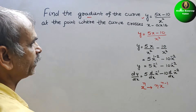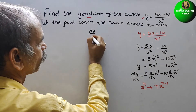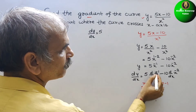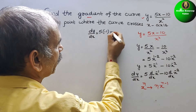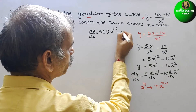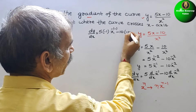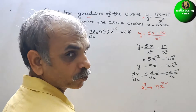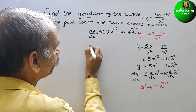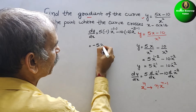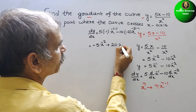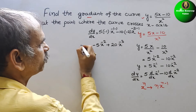Therefore, we will get dy by dx equals 5 times minus 1, and x to the power of minus 1 minus 1, which is minus 2. Next, minus 10 and n is minus 2, so x to the power of minus 2 minus 1. So we will get minus 5x to the power of minus 2, plus 20x to the power of minus 3. This is your dy by dx.